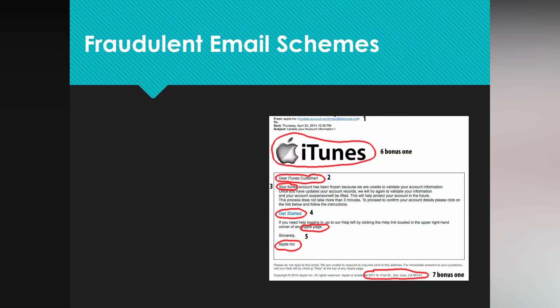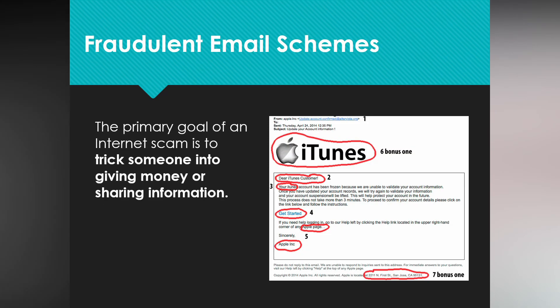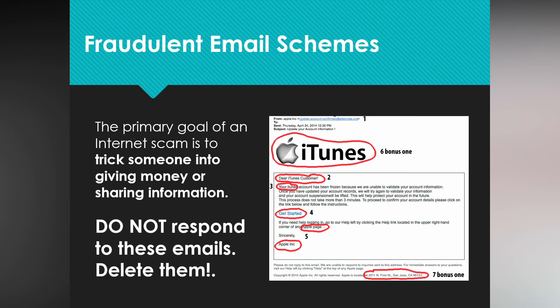Let's take a look at some fraudulent email schemes. The primary goal of an internet scam is to trick someone into giving money or sharing information — do not respond to these emails, delete them. Here's an example: 'Your iTunes account has been locked' — then they want you to click a link to secure your account. You don't click it though, because it's a trick. You put in your iTunes information and now they have access to your account and can buy things and charge to your credit card.